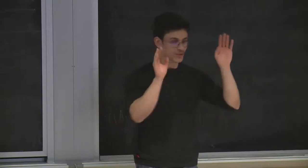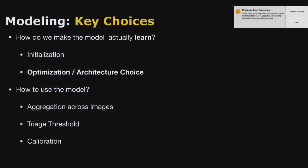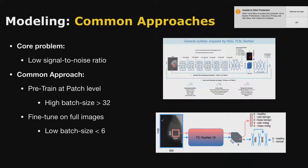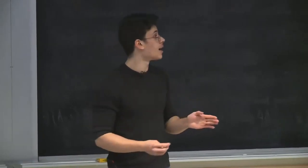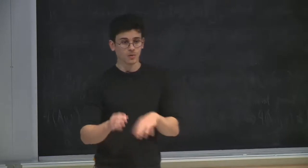That's initialization - if you don't get this right, nothing works for a very long time. Next, another important decision is your optimization and architecture choice. A very common approach in prior work is to train at a patch level first - take subsets of the mammogram, annotate them for radiology findings like benign masses or calcifications, pre-train on that pixel-level prediction task, and then fine-tune that initialized model across the entire image. A paper that came out just yesterday does the exact same approach with slightly different details.